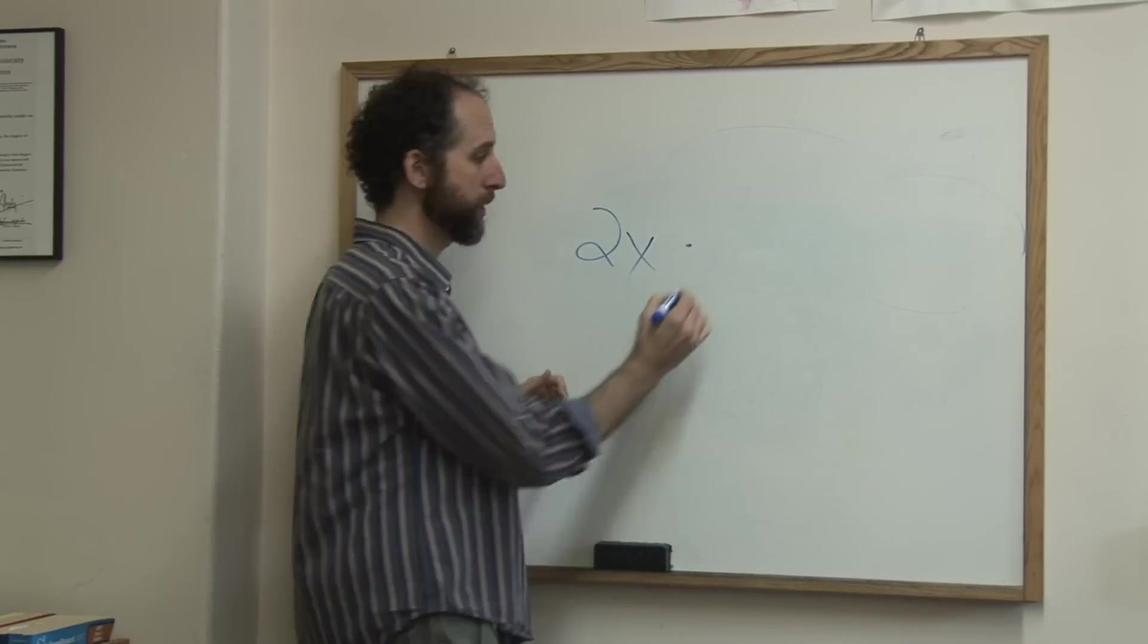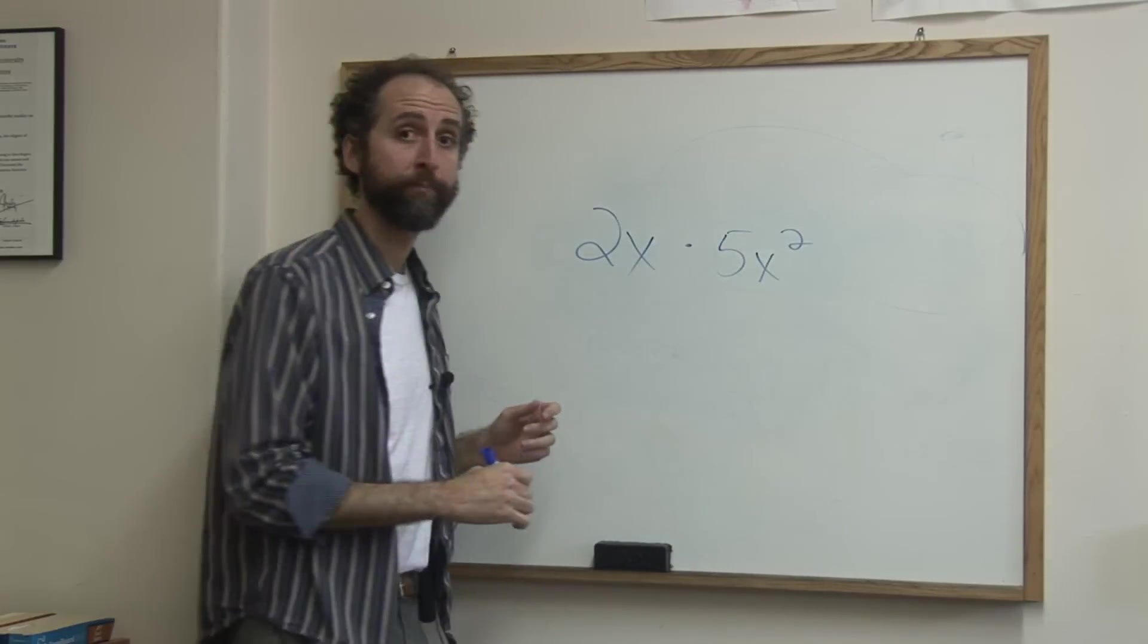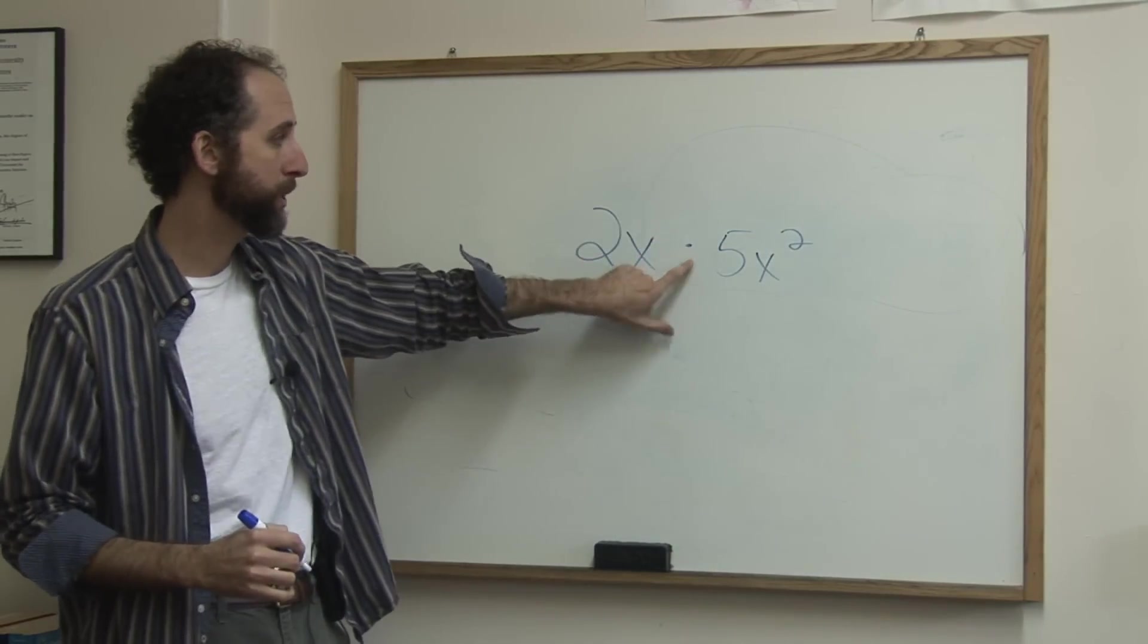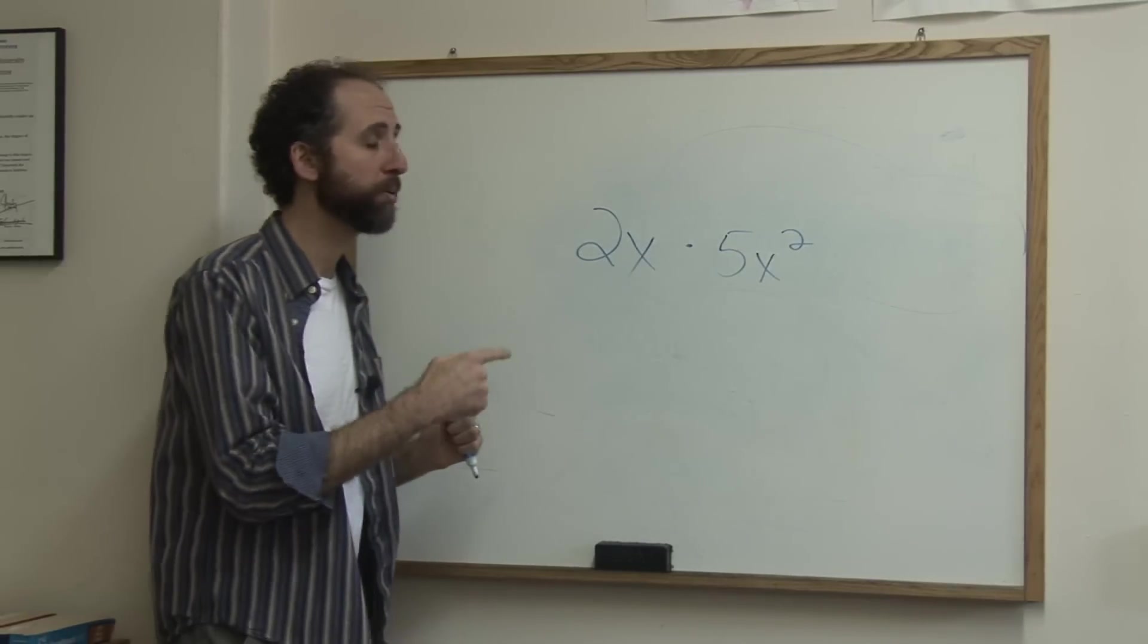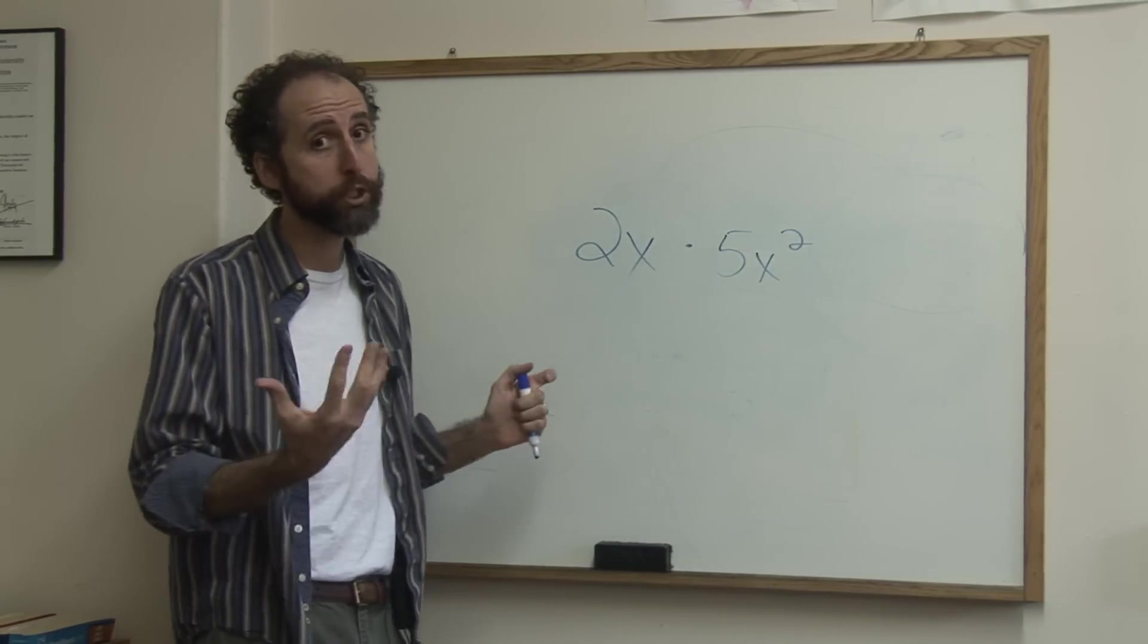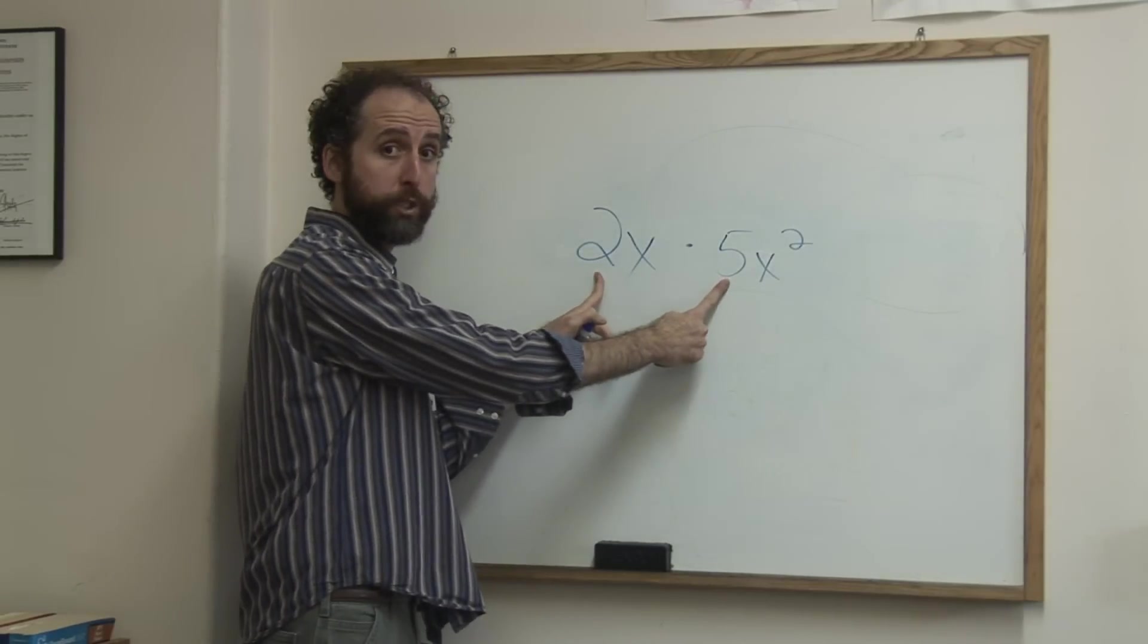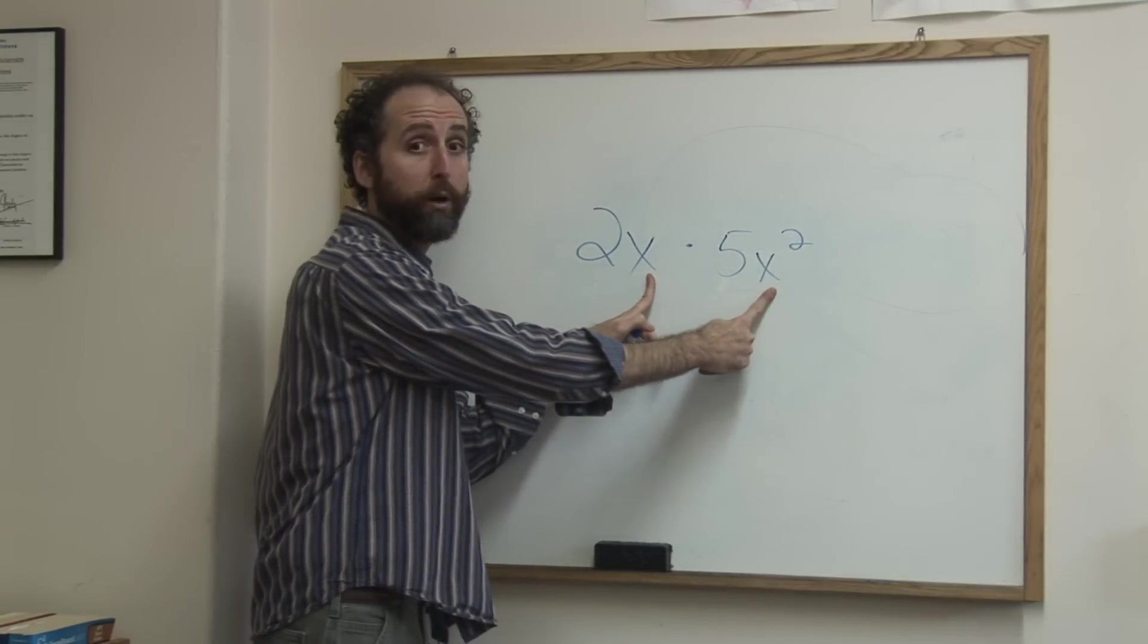2x times 5x squared. So we have a monomial times a monomial. And the way you multiply monomials is you multiply things that match, or essentially, you multiply the coefficients and you multiply the variables.